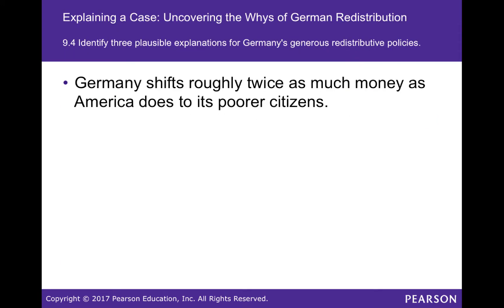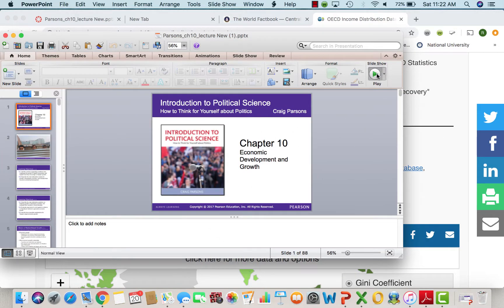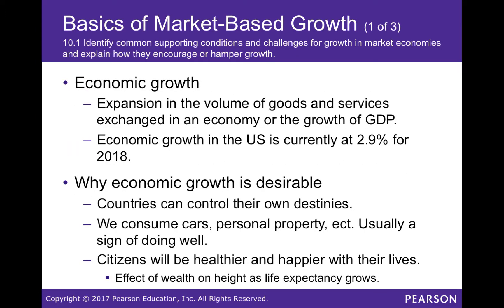Moving to Chapter 10 on development and growth: U.S. economic growth is about 2.9 percent per year. We need to control for inflation and unemployment. When there is economic growth, people are happier — they buy more personal property, which signals the economy is doing well.